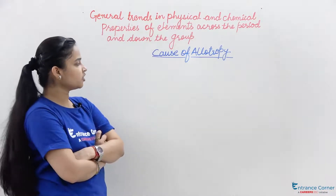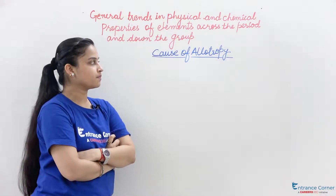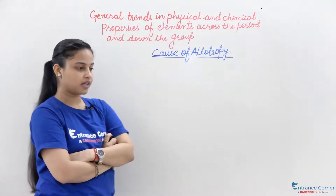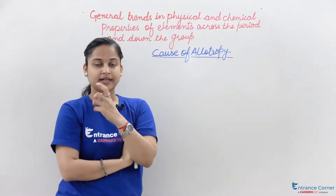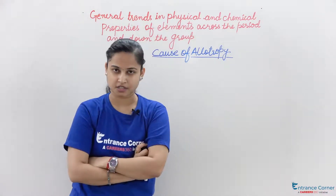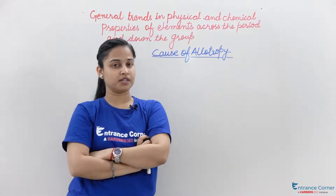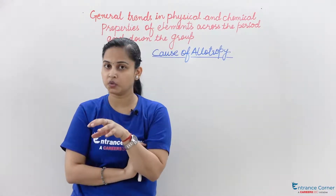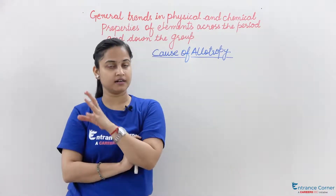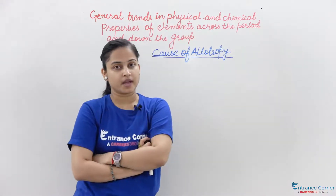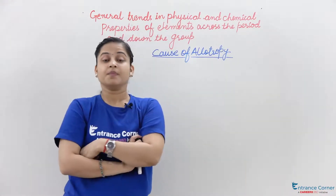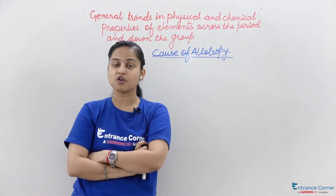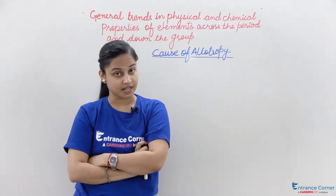If I talk about the allotropic forms of carbon — carbon has two common allotropes: diamond and graphite. In diamond, the carbon atoms are bonded together in a tetrahedral lattice arrangement, whereas in graphite all the carbon atoms are bonded together in a sheet of hexagonal lattice.